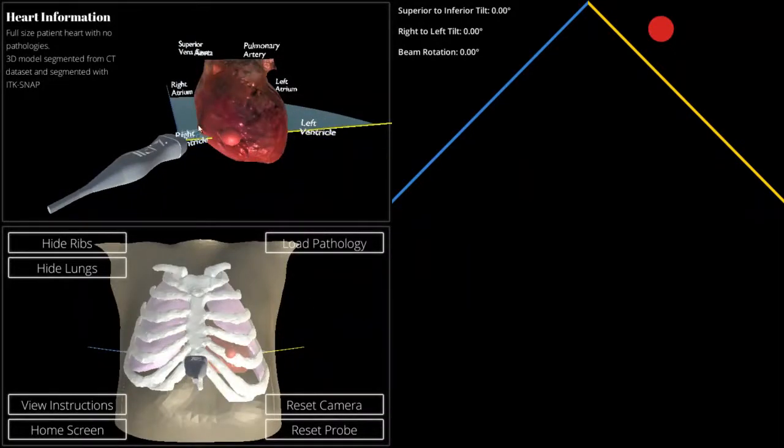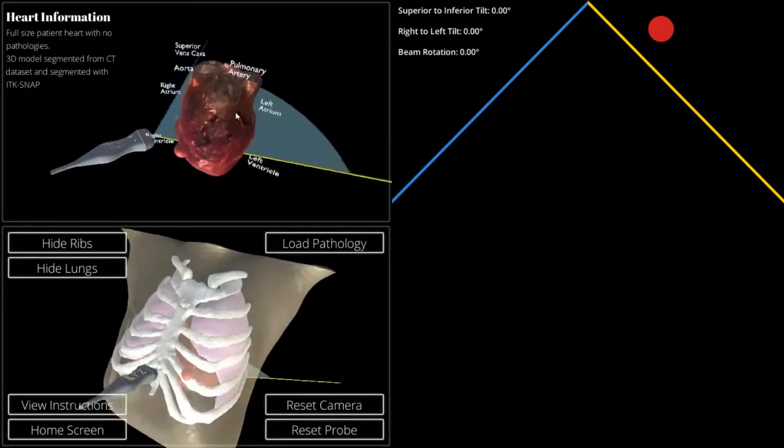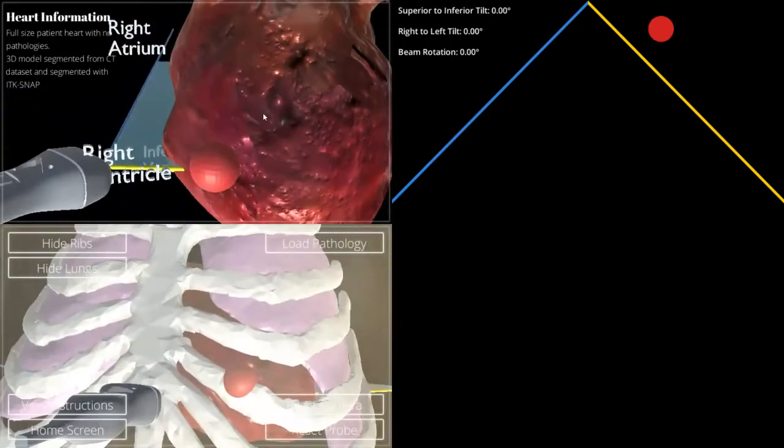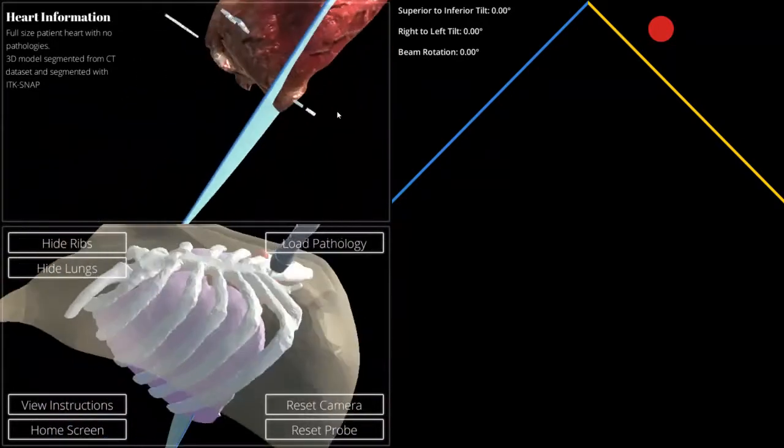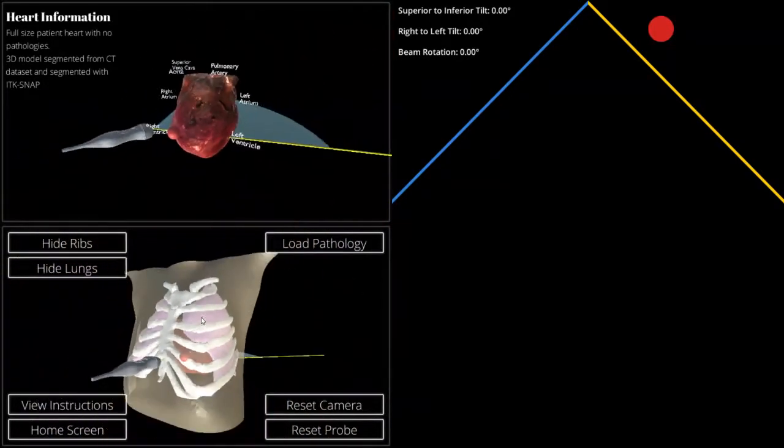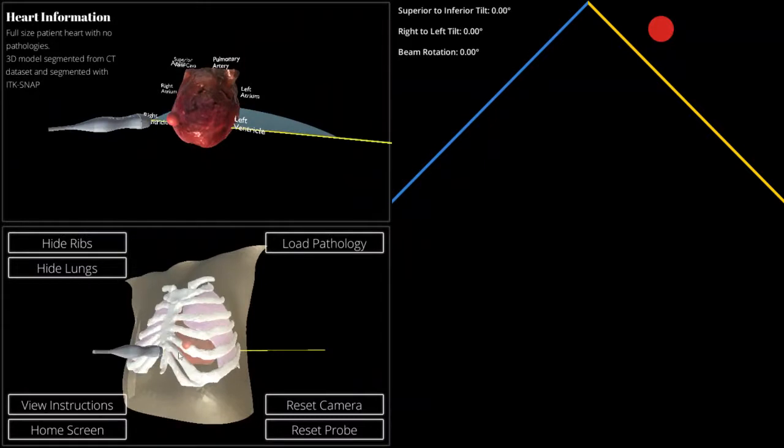The first scene that we're greeted with is a normal patient's heart. In this top view, we can see the different anatomical features at least on the surface, so that you always know where you are. On the bottom view is where you're doing the positioning between the ribs, the lungs, the heart, and the person's chest.